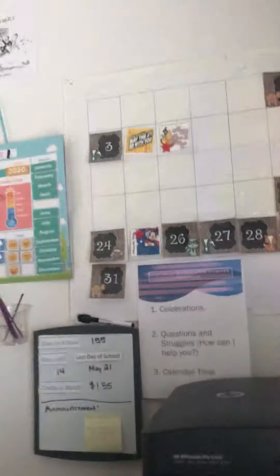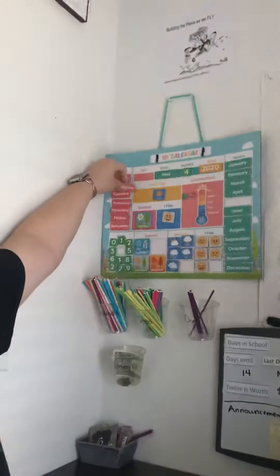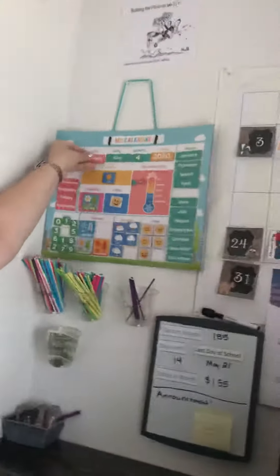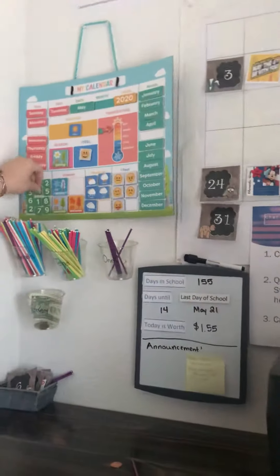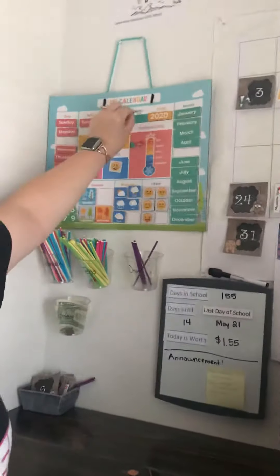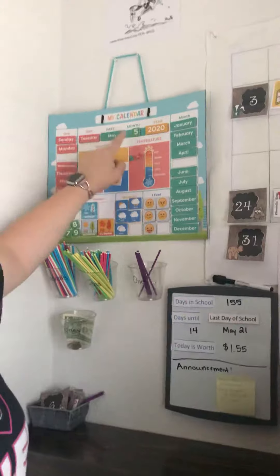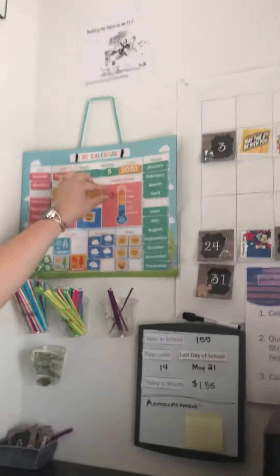So we'll change this over to Tuesday and change this one to the fifth. It is Tuesday, May 5th, 2020. We're gonna move this down a bit. It got a little cooler overnight and the storms rolled through and a cold front came.